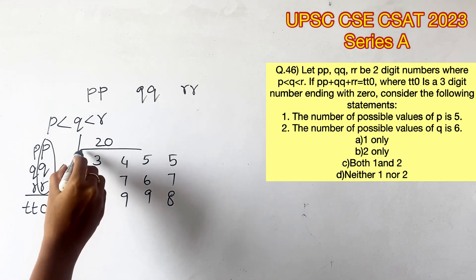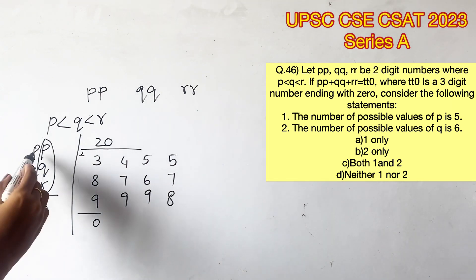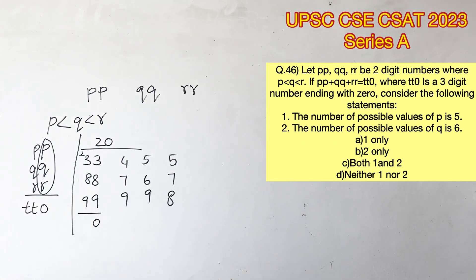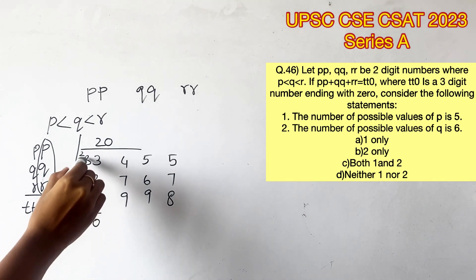If we add up 3, 8, and 9, we get 20 with 2 carried over. We know that PP, QQ, RR is the format, which means these numbers should be 33, 88, and 99.